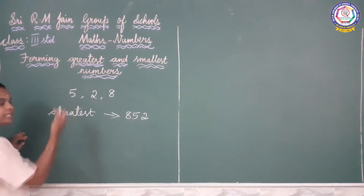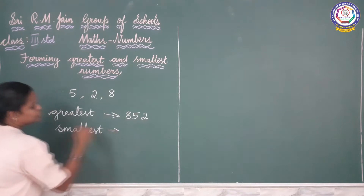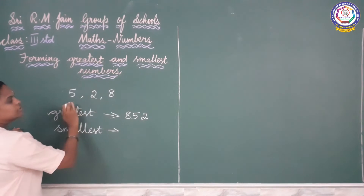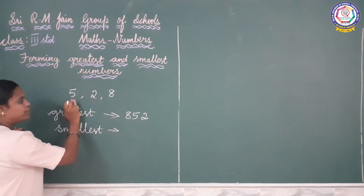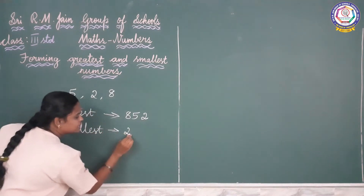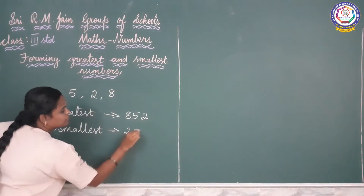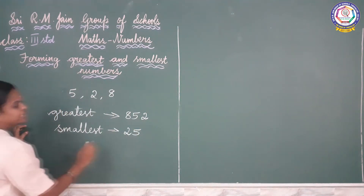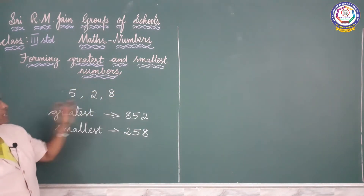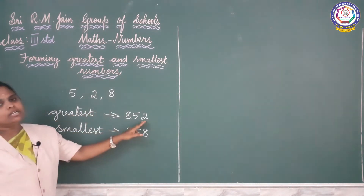Next we will find out the smallest number. So we are going to find out the smallest number by comparing these 3 numbers — 5, 2, and then 8. Which is the smallest number? 2 is the smallest number. Which is the next smallest number? 5. Then which is the next number? 8. So the smallest 3-digit number is 258. Greatest number is 852.